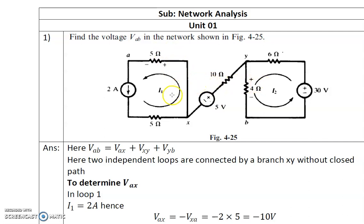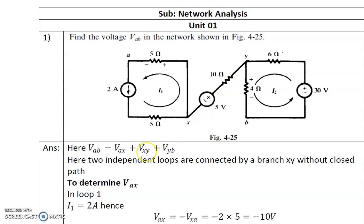This problem has two independent loops connected by a branch, but this branch is not a closed loop, hence this branch will not carry any current — that is, no current flows through the 10 ohm resistance. First, we'll determine VAX.